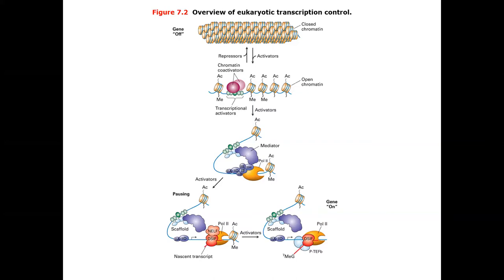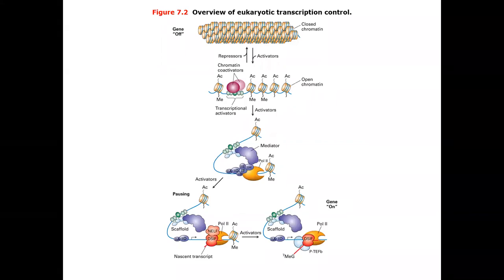The basic mechanism still remains the same — that is, polymerization of RNTPs into RNA molecules using DNA as a template. The process involves determination of the start site for transcription and the stop site for transcription: which part of the DNA will be copied into an RNA. However, the details and regulation of it is mind-bogglingly more complex.